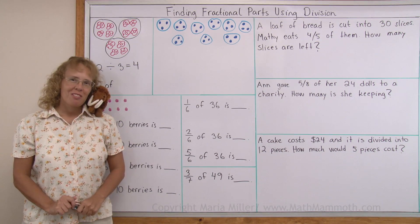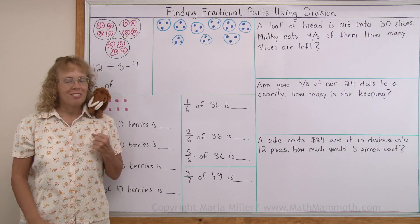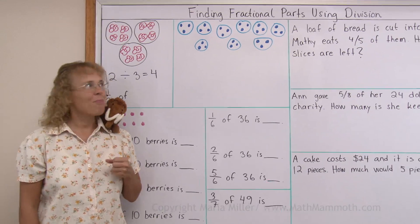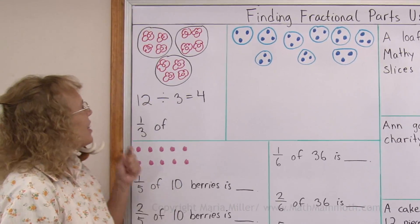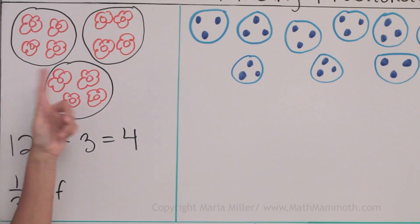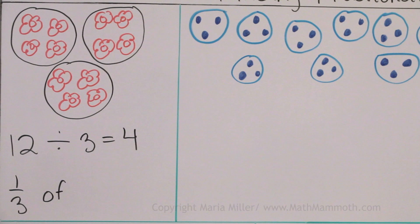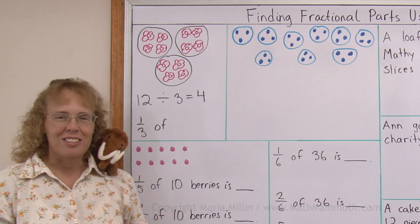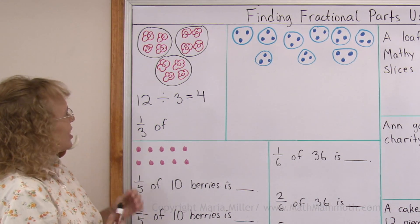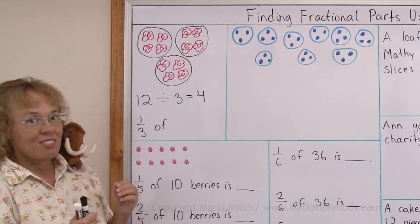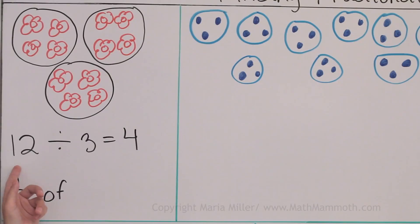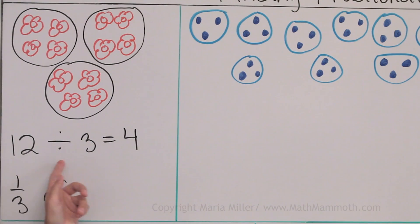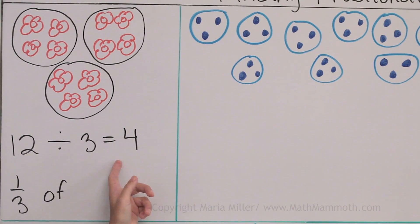You know division and fractions are closely related. In this picture I have twelve flowers and they are divided into three groups, and each group has four flowers. That's all easy, right? So I can write the division: twelve divided by three equals four.